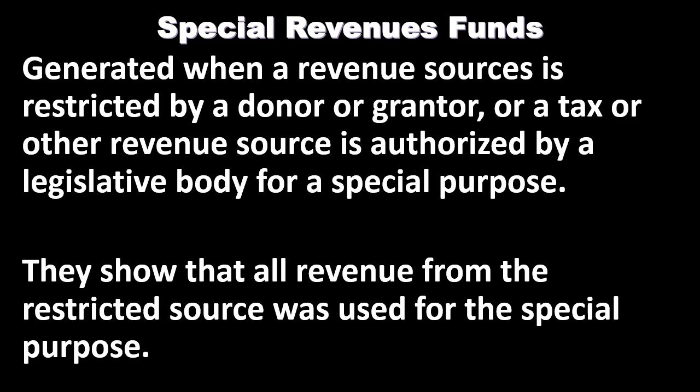Special revenue funds may be multiple, unlike the general fund which we will have one of. Special revenue funds are generated when a revenue source is restricted by a donor or grantor, or a tax or other revenue source is authorized by a legislative body for a special purpose. They show that all revenue from the restricted source was used for the special purpose. For example, a gasoline tax designated specifically to fix roads would be tracked through a special revenue fund to ensure the revenue is applied as required by legislation.